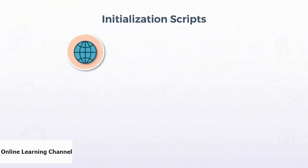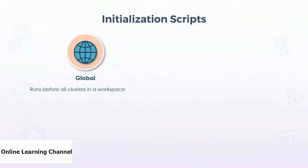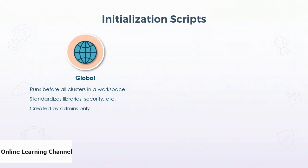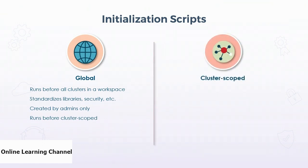Next we have initialization scripts. Initialization scripts run when a cluster instance is spooled up and are meant to get the cluster into an expected state. Configuring required libraries on the cluster is a perfect example of what initialization scripts are for. There are two types. There's the global script which is run for all clusters in the workspace — it's great for standardizing all clusters. Only administrators can set up global initialization scripts, since they affect all clusters in the workspace. Global initialization scripts are always run before the cluster-scoped initialization script.